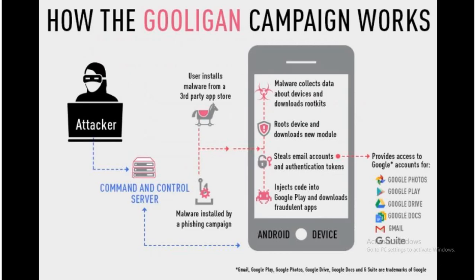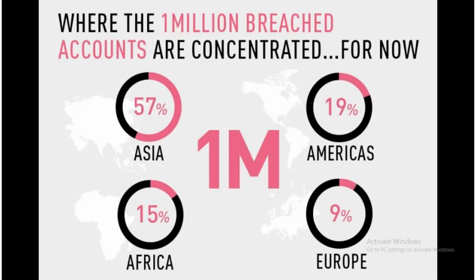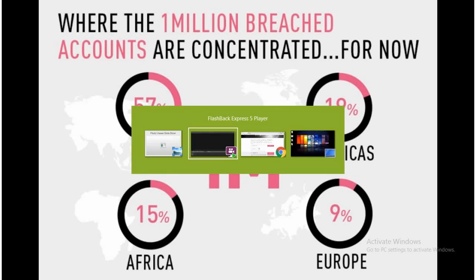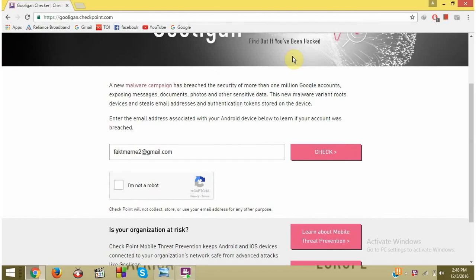This is exactly how Gulligan malware works. It can steal your email accounts, your authentication tokens, and steal your Google data. It is mainly affecting the users of Asia based on Android users. What you can do to check if your account is one of them.